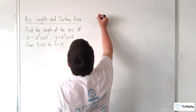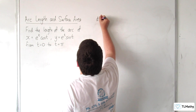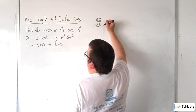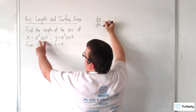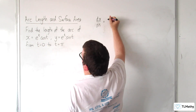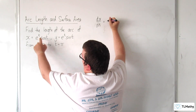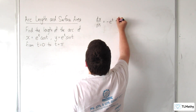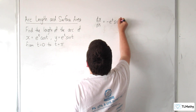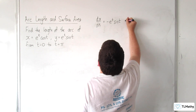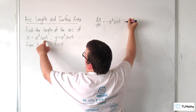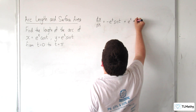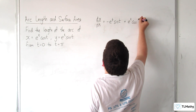The first thing we need to do is find dx/dt and dy/dt. So dx/dt — we're going to have to use the product rule. We get e to the t times the derivative of cosine t, which is minus e to the t sine t, then plus sine t times the derivative of e to the t, so plus e to the t cosine t.